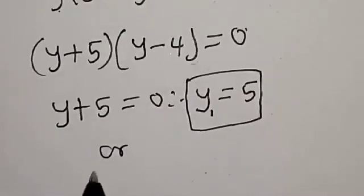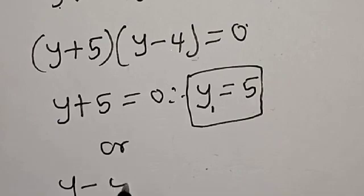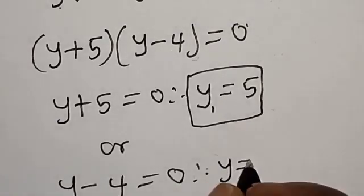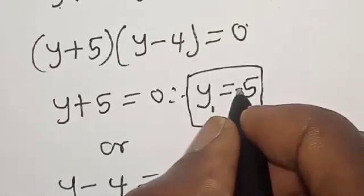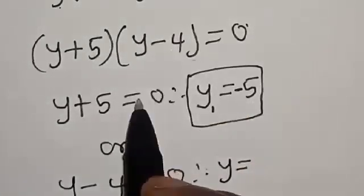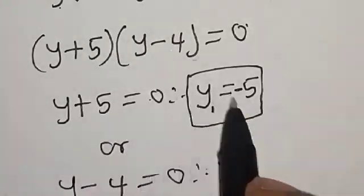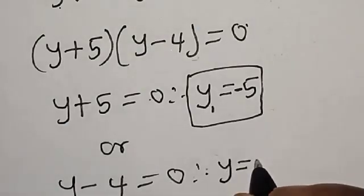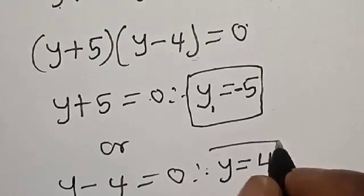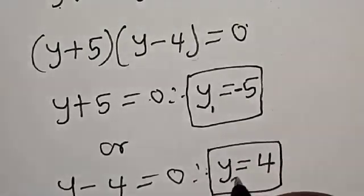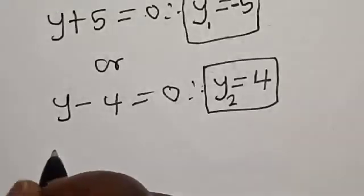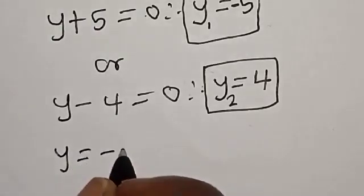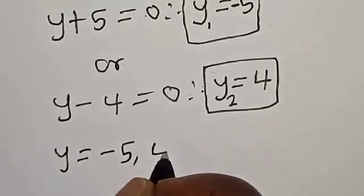Or y - 4 = 0. Therefore y equals... Sorry, the first solution should be minus 5, because when plus crosses over it becomes minus. So y1 = -5, and from y - 4 = 0, we get y2 = 4. The values of y are -5 and 4.